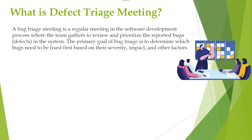Critical bugs that impact the core functionality of the system are usually given the highest priority. Once prioritization is completed, the bugs are assigned to developers for resolution. Bug triage meetings are crucial for ensuring that the most critical issues are addressed promptly, and they also help in maintaining the quality and stability of the software being developed.